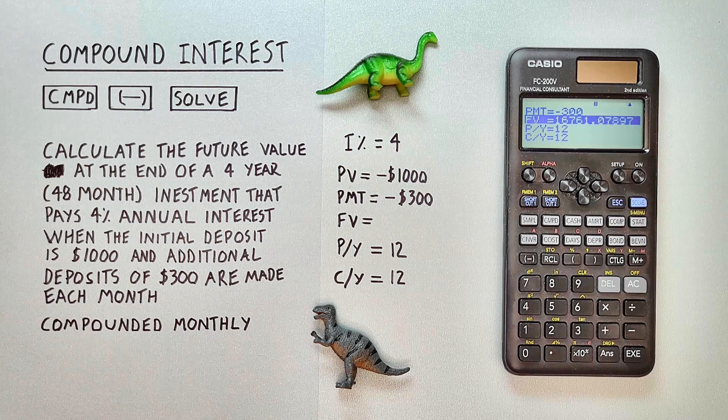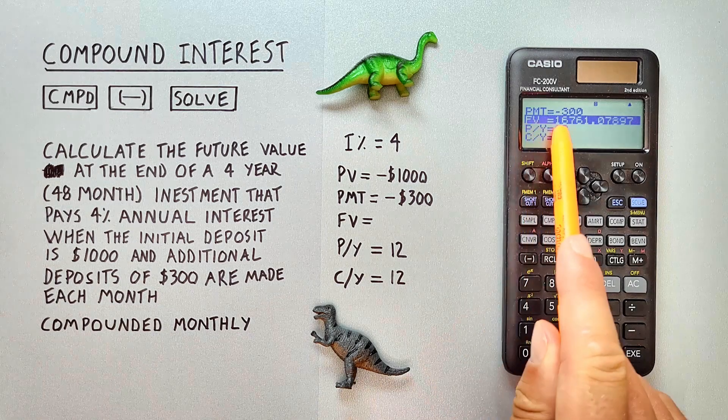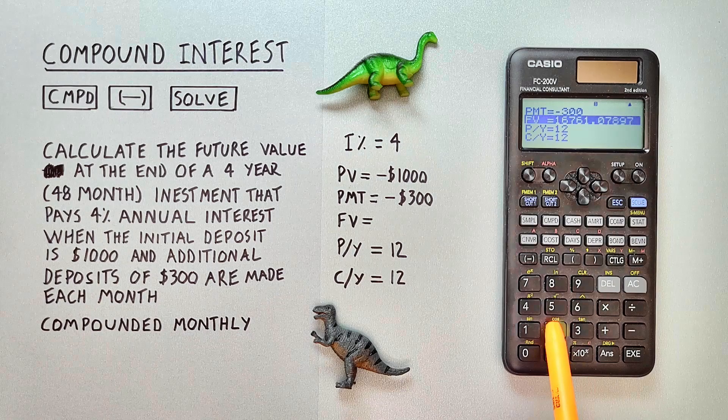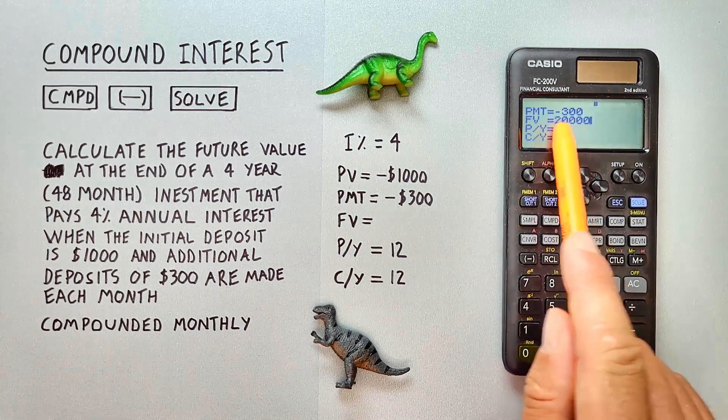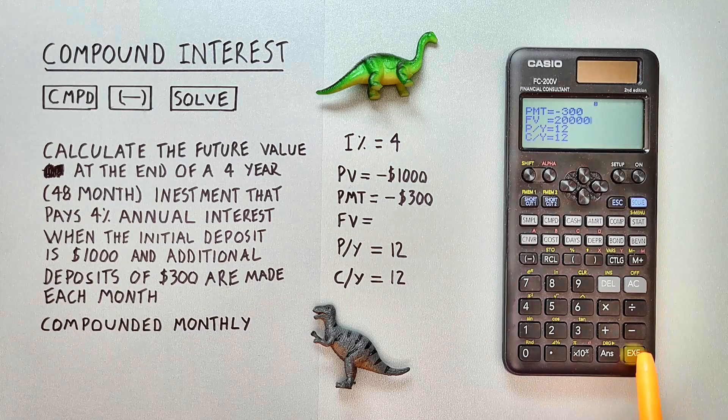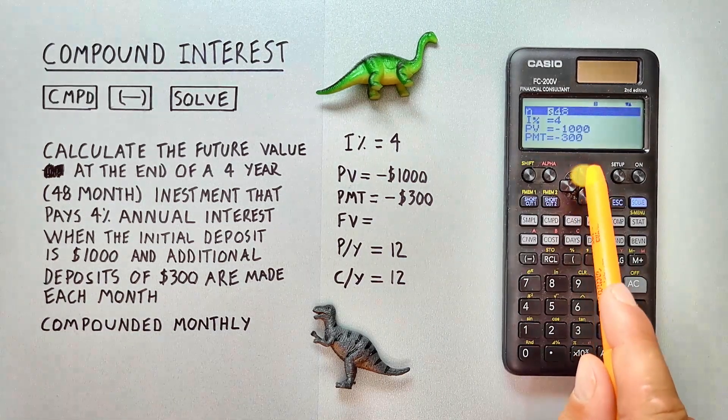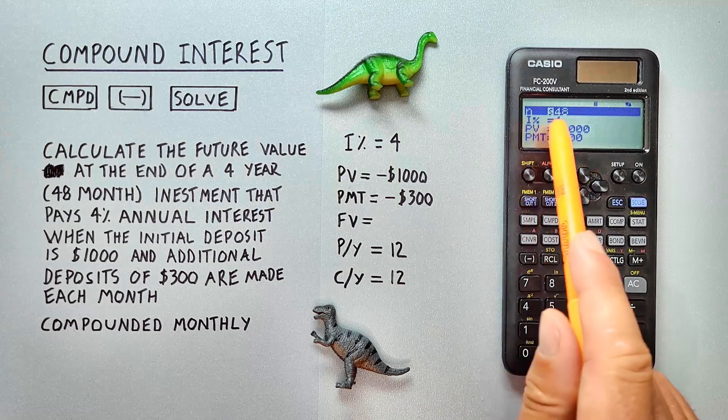What if we want to determine a different value? Like for example, let's say we wanted to get our future value to $20,000. We enter that for our future value and hit EXE.